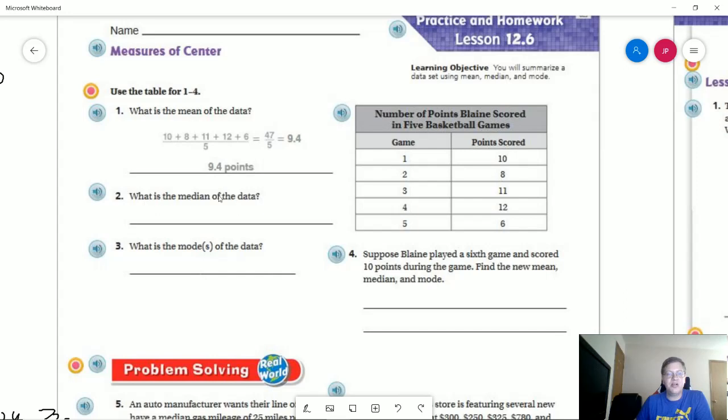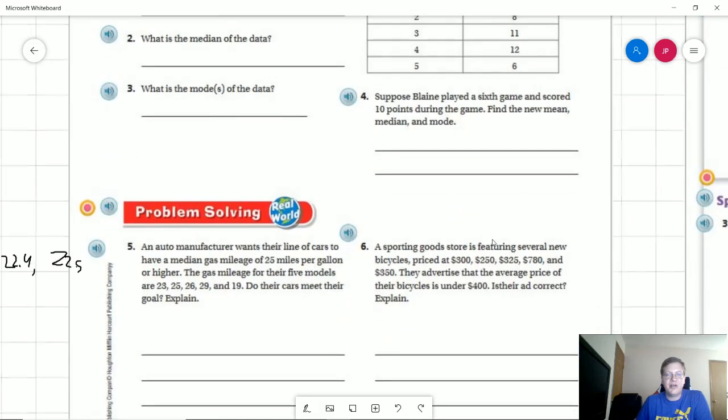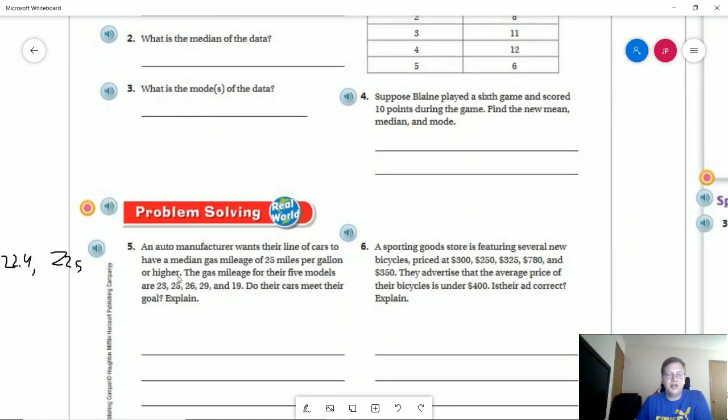So for the homework questions, we are going to look at number two. So our median would be the center number of this. Our mode would be any number that's repeated. For number five, we are going to be looking for a median average of 25 miles. So we're going to take all of these, add them together and divide by the number of data points to see if we have a median of 25 or not. And then we are going to, as part of the explanation, say not only yes or no, but what was the difference between what we were looking for and our goal of 25 miles.